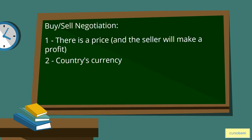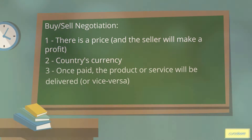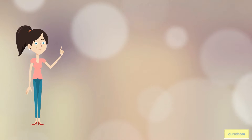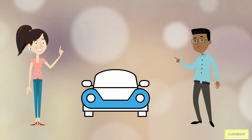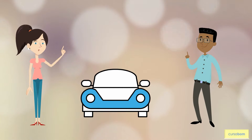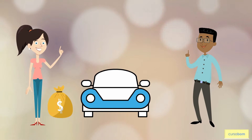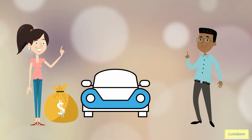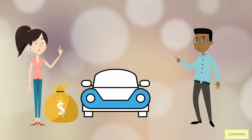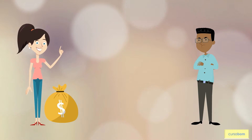Third, once paid for, the product or service will be delivered, or vice versa. These principles are so common that most of the time we don't think about them, except when a purchasing transaction doesn't follow the script — the price changes after being agreed, or the product, service payment, or delivery does not happen as expected.